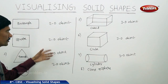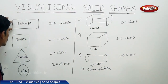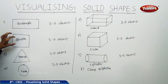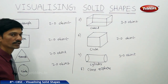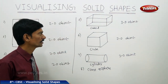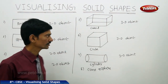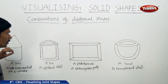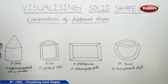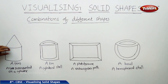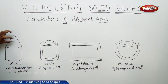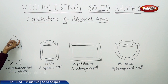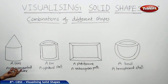In all these figures, the shapes are single — only a rectangle, only a square, only a triangle, only a circle. But in our day-to-day life, we come across figures that are combinations of two different shapes. For example, a tent has a cylindrical shape with a conical shape on top — this is a combination of a cylindrical shape and a conical shape. A cone surmounted on a cylinder.